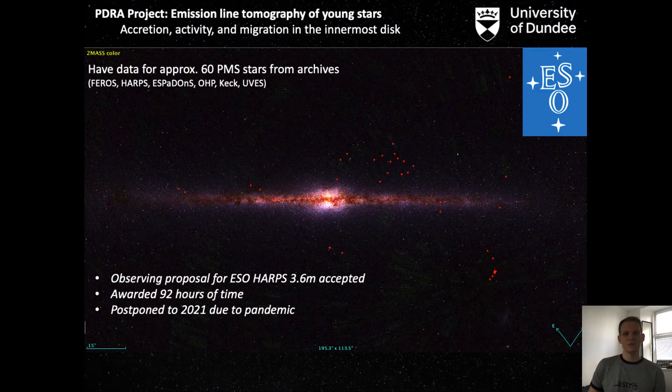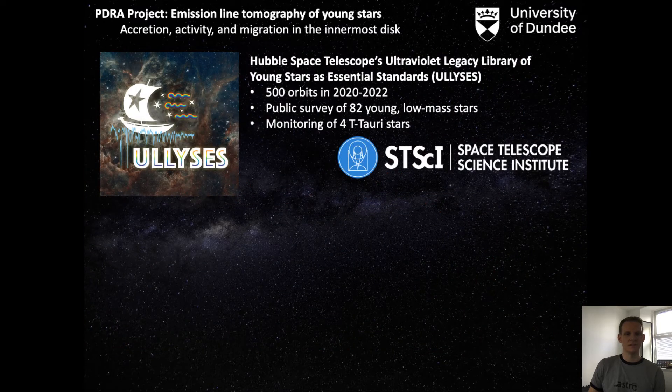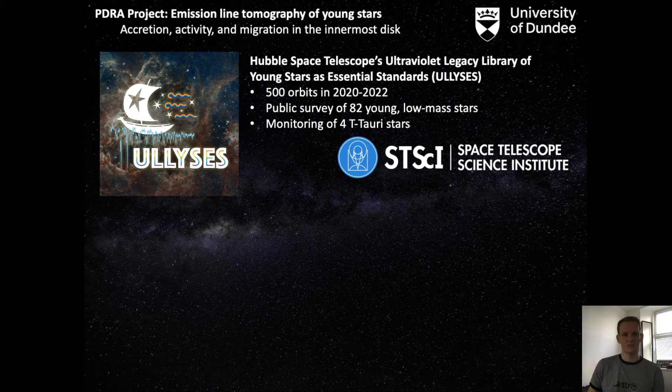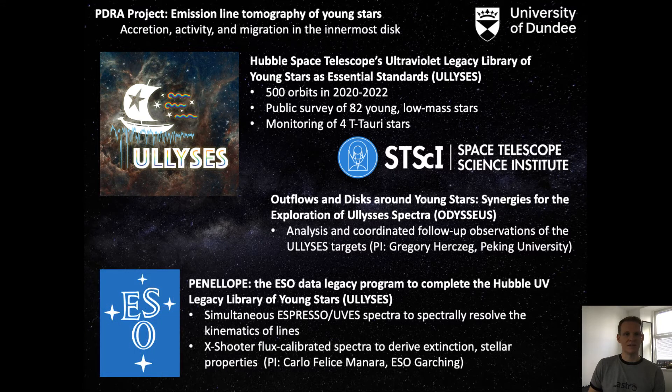We also have new data available soon from the HST program Ulysses, which will be taking ultraviolet spectra of many young stars, as well as conducting an ongoing monitoring program of four T-Tauri stars. We're part of the collaboration ODYSIS, which will be analyzing these data, and also the ESO large program Penelope, which will observe the HST targets simultaneously from the ground using ESO instruments. So this will cover the range from near infrared through to near ultraviolet.